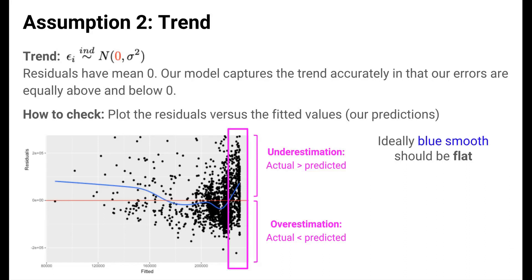If this assumption were met, the blue smooth trend would be flat. It would lie more or less on top of the reference red line at y equals zero. Violations of this assumption indicate that something is lacking in the way that we formulated our model.